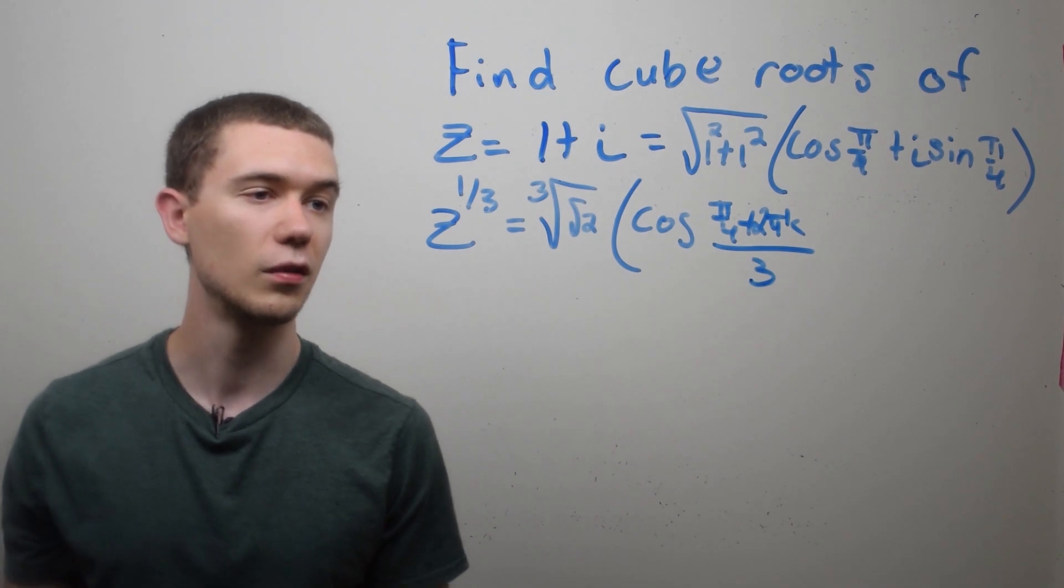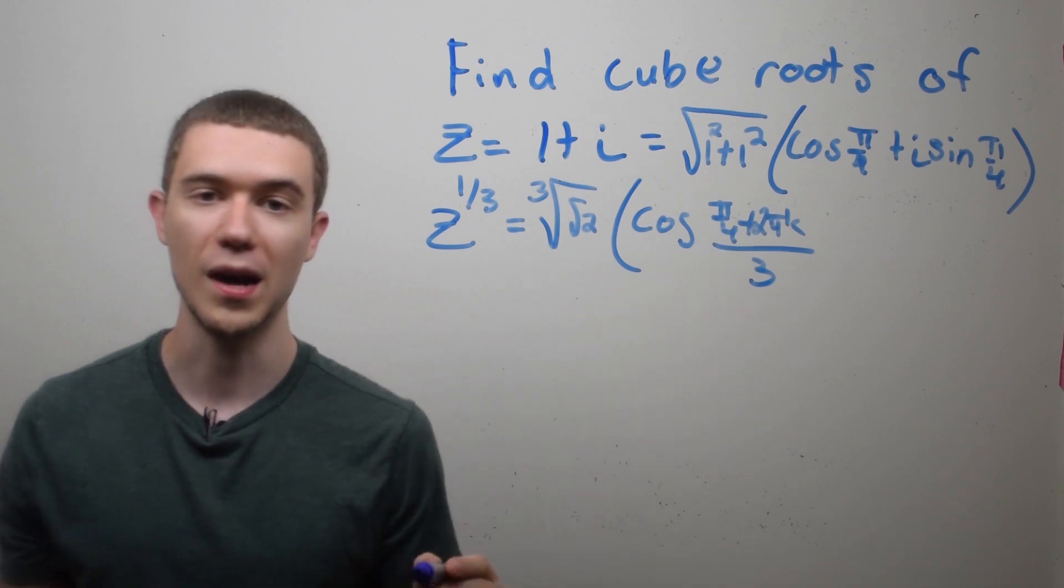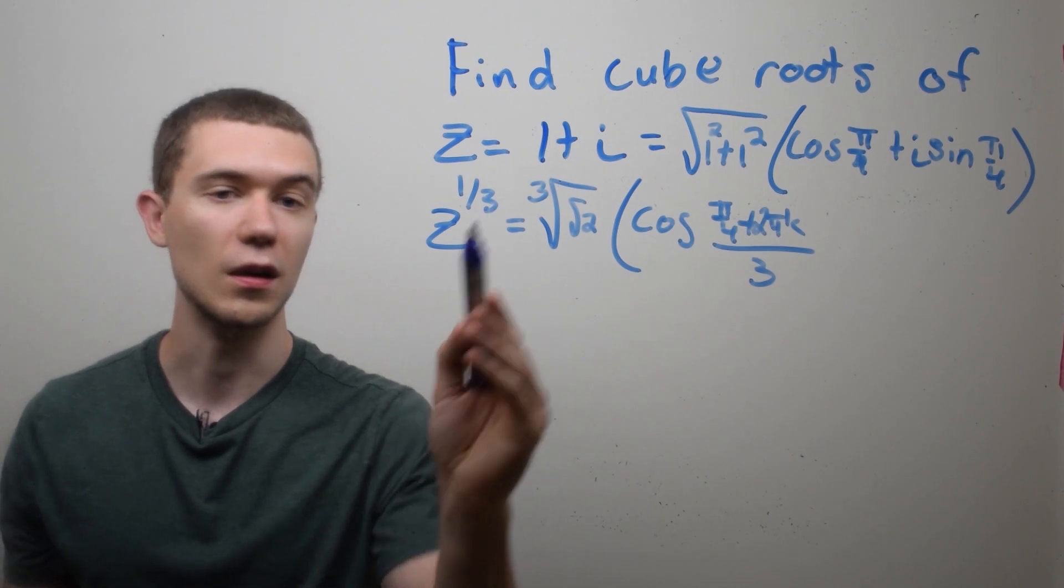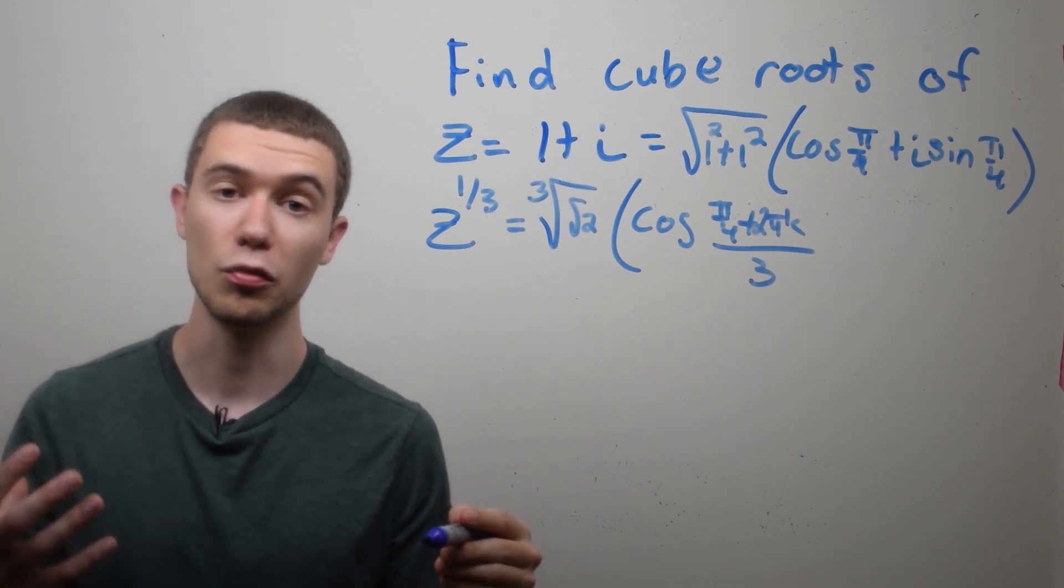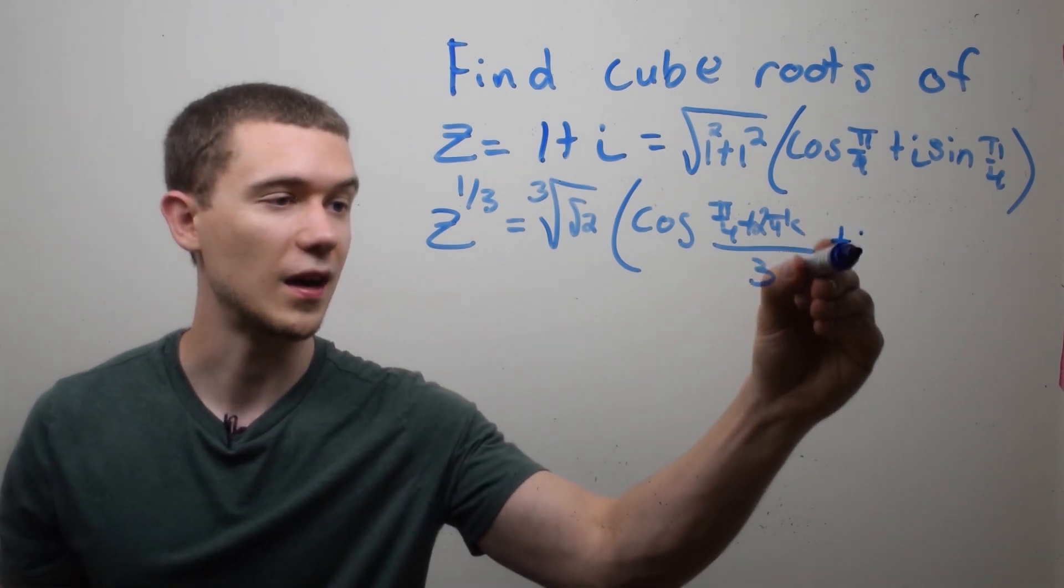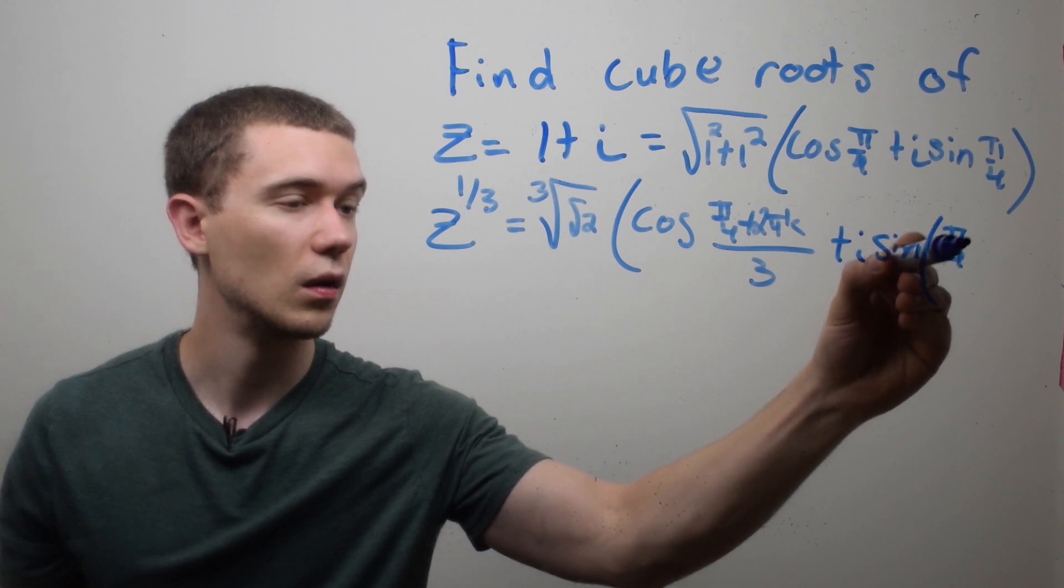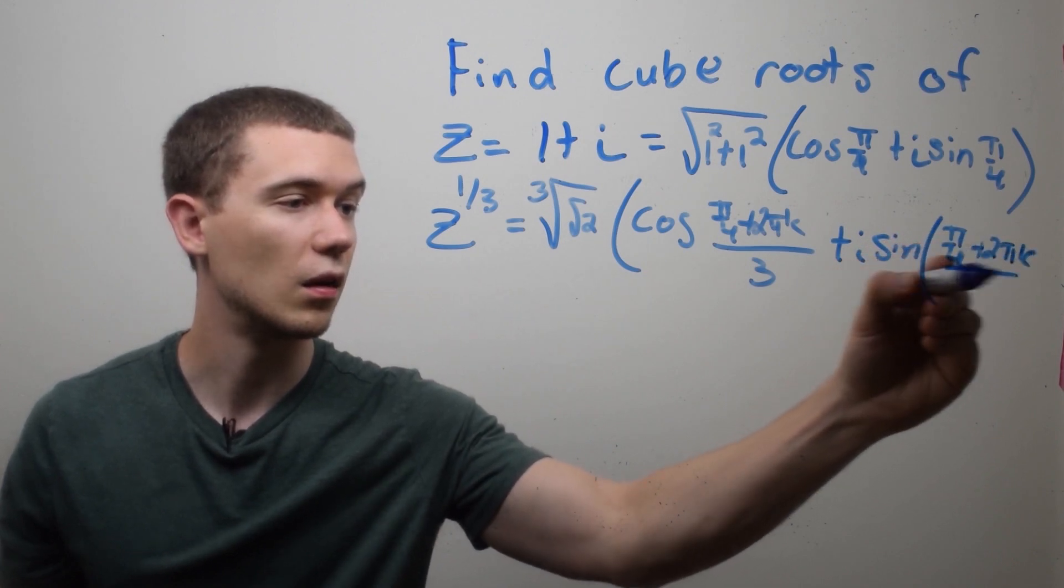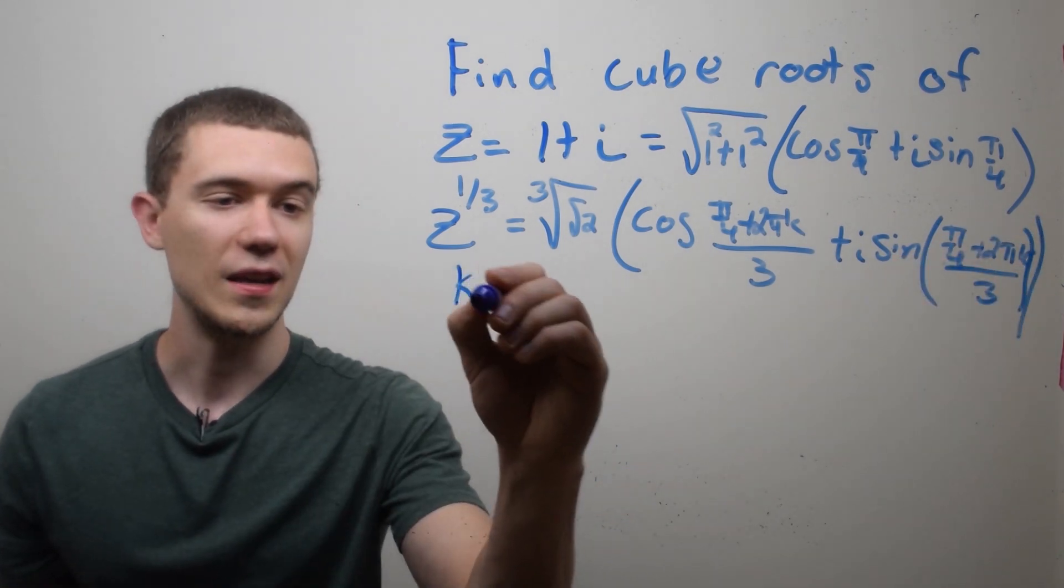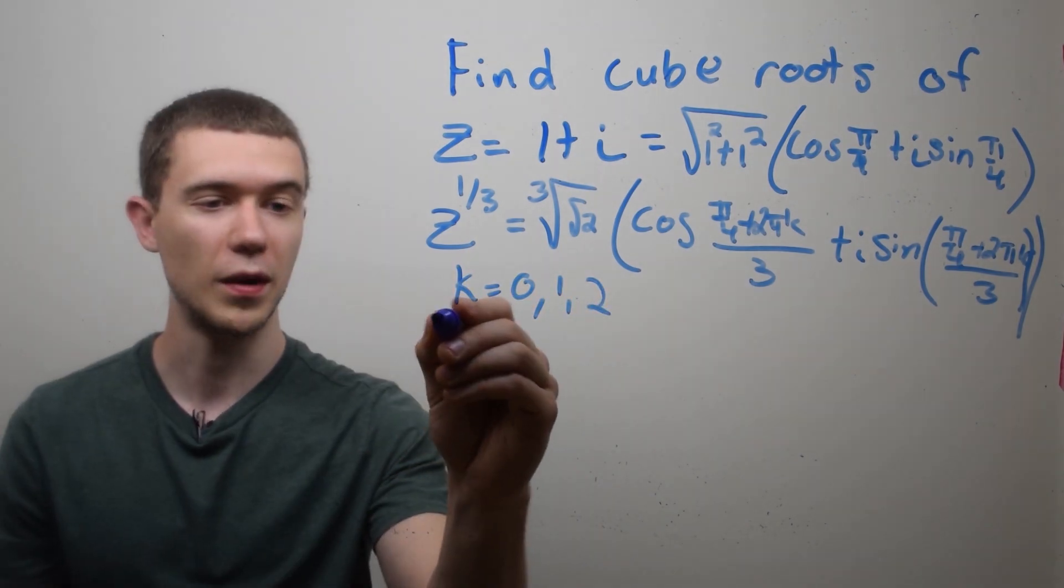And then I have to cube root that times cosine of pi over 4 plus 2 pi k all over the number 3. So where is this coming from? Well, pi over 4 was the argument. I always add plus 2 pi k inside the argument. And then I divide by 3. That was the root. So if it was the fourth root, I'd be dividing by 4. But in this case, it's 3. I divide by 3. And then it's plus i sine of the same thing. Pi over 4 plus 2 pi k all over 3. And we're going to write this out for k equaling 0, 1, and 2. All the numbers before 3. So all the roots are given by the collection.